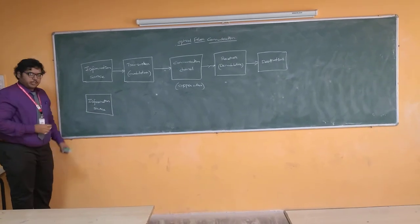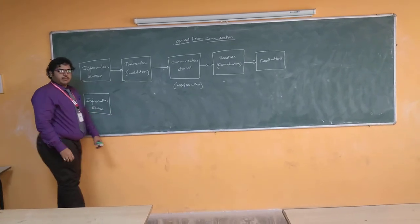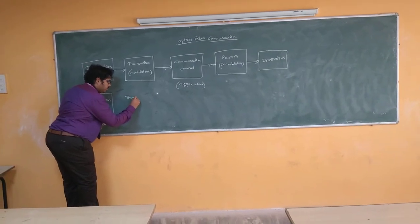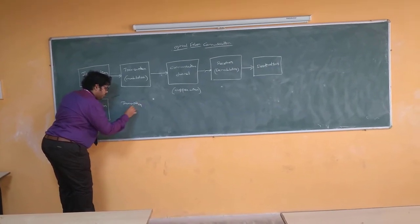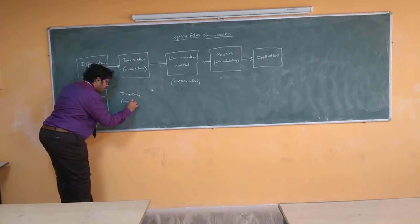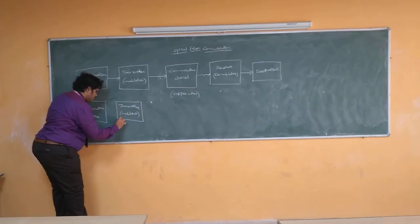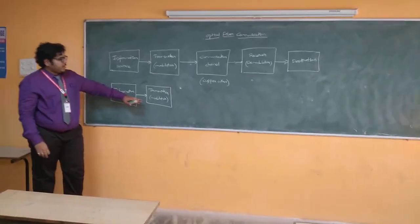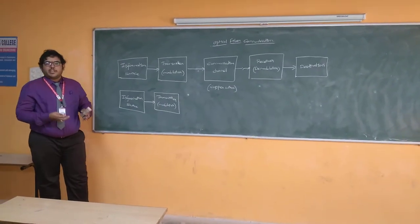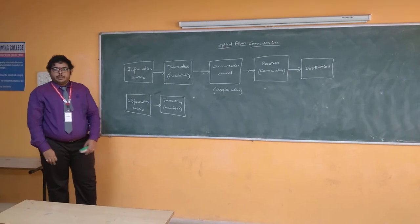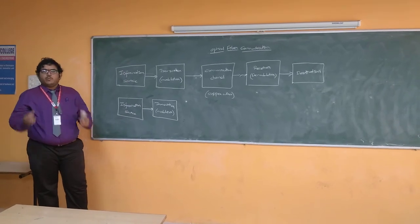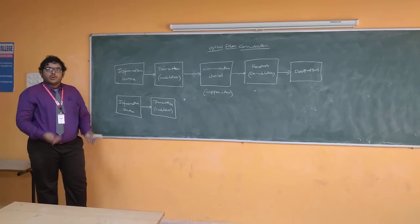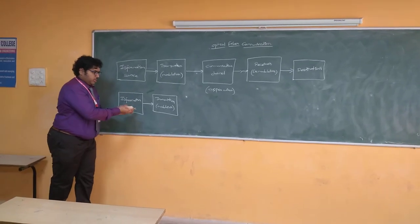This particular block has some input message, and we will also have the same transmitter or modulator section because it has to boost up the information signal for the longer distance. The information signal is an electrical signal, and the transmission device will process the electrical signal that is added to a carrier signal. But as we are saying, in optical fiber communication, we have to transfer a light source in a particular cable. So how do we convert this particular transmitter signal into a light source?